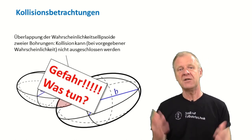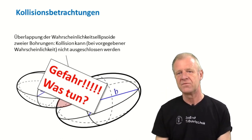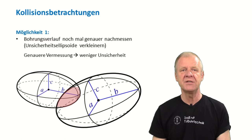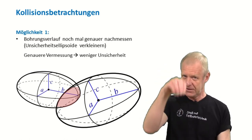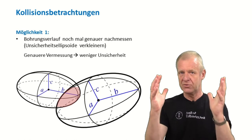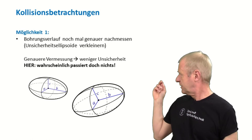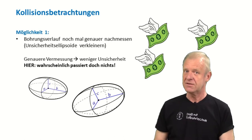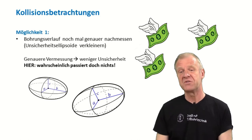So what do we do if there is a probability of a collision with another well, which of course is a very dangerous thing? For example, we could log both wells once again with a more accurate measuring device. You can pick up better measuring sensors — for example, gyro tools — and run them through both holes. As the measurements are more accurate now, our ellipsoid of uncertainty becomes smaller than before. In the best case, we might be able to conclude that the collision risk is now negligible. However, such measurements will take a lot of time and money.